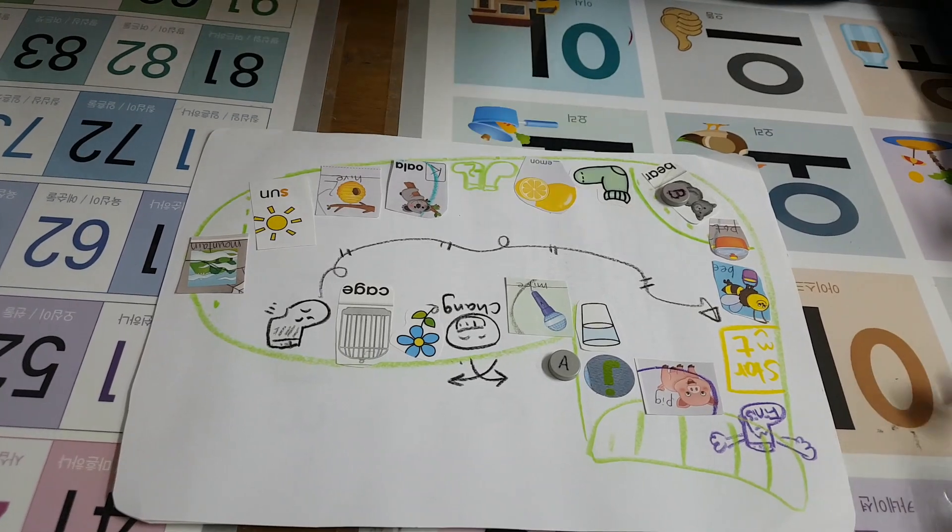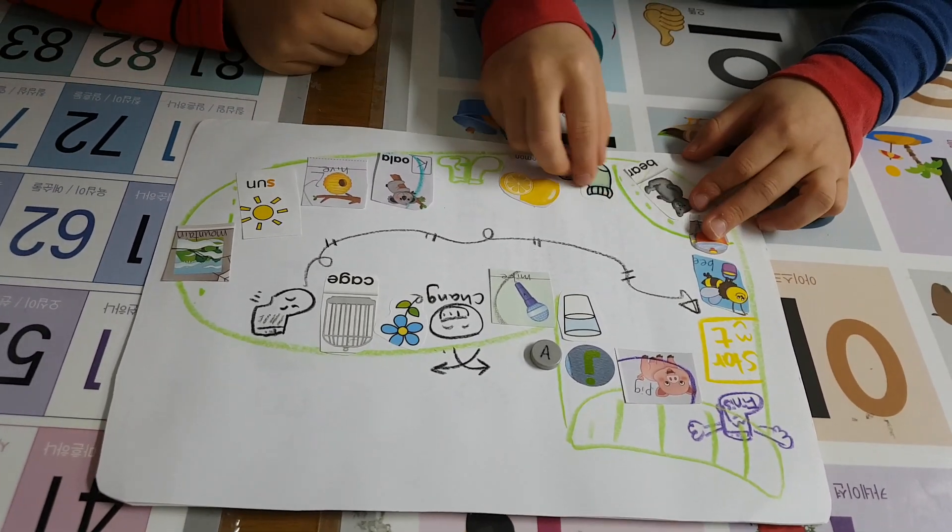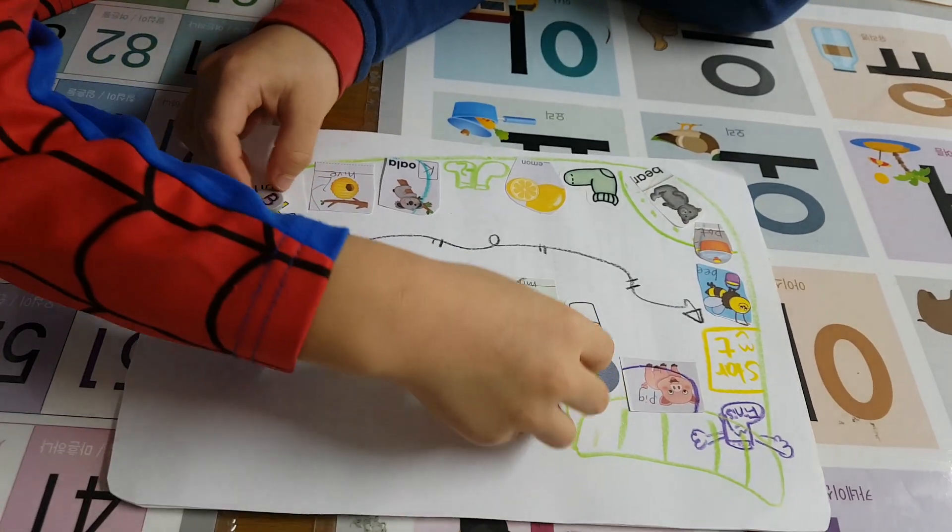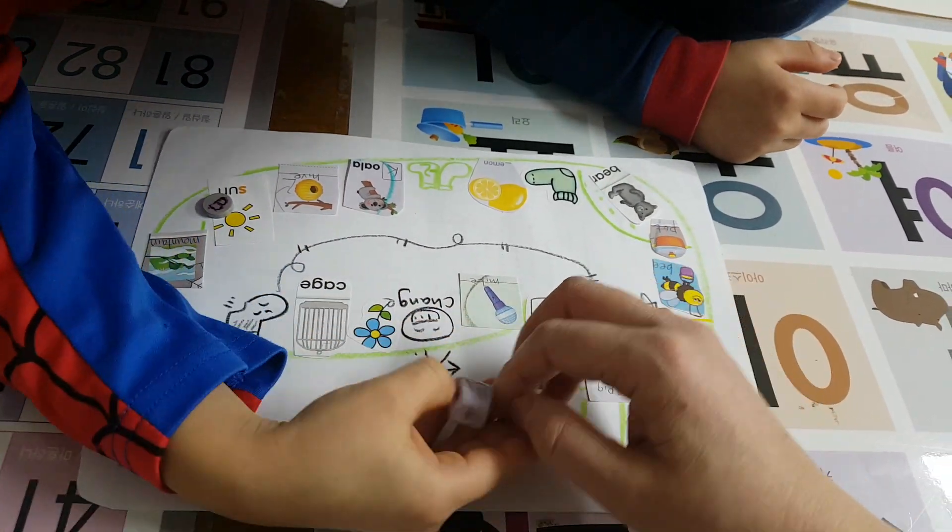Yes, okay. Go, go, go! Six. One, two, three, four, five, six. What is it? Sun. Sun, good job. Roll the dice.